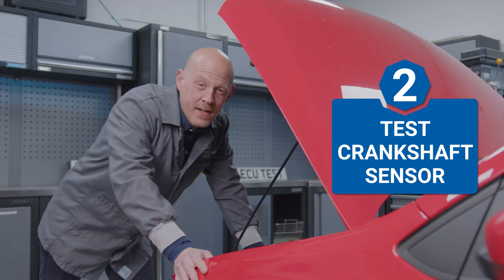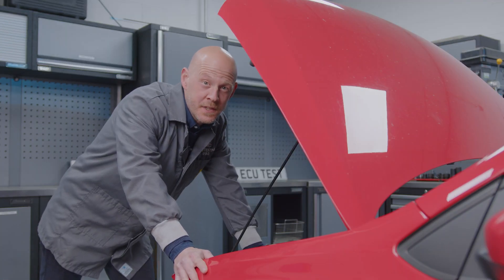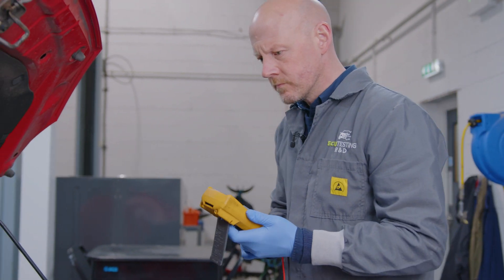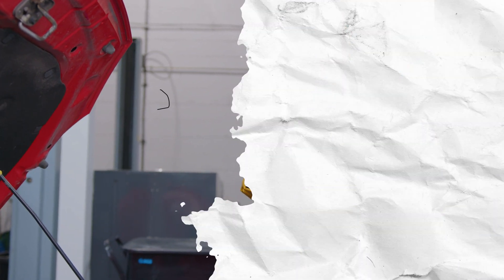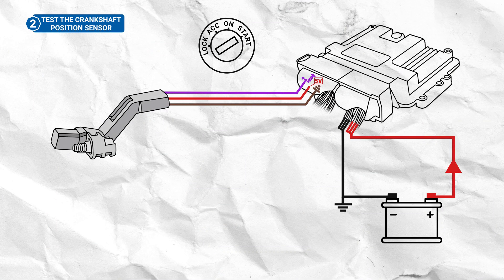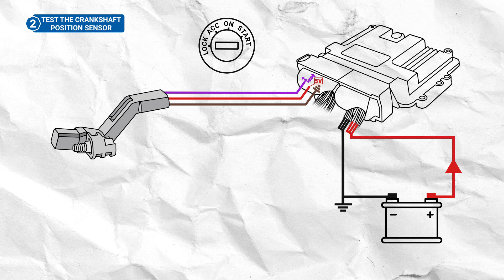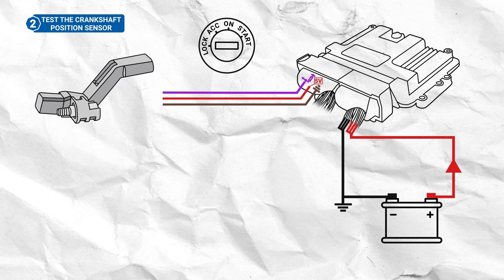Let's start by testing the crankshaft position sensor circuit is functioning correctly by checking it has good 5 volt and ground reference supplies. Ensure the ignition is switched off, and then locate and disconnect the crankshaft sensor from its connector.